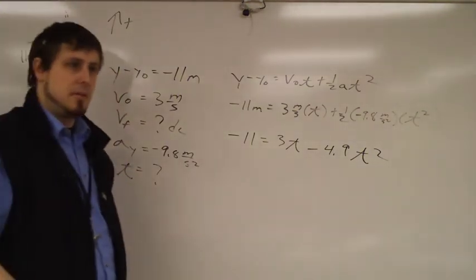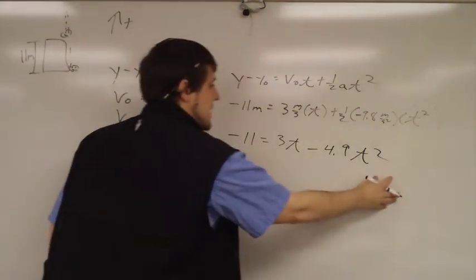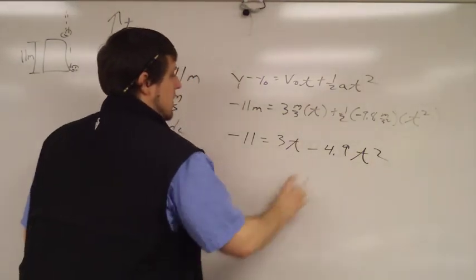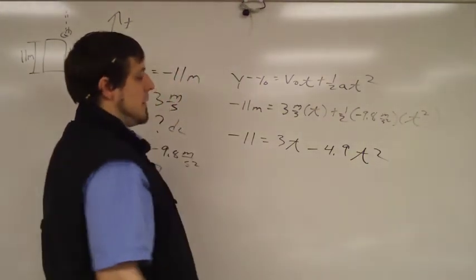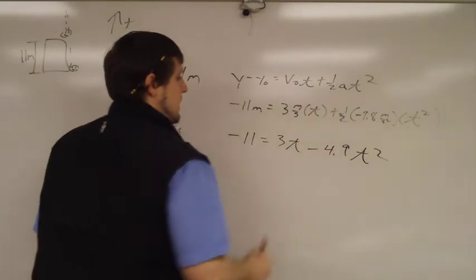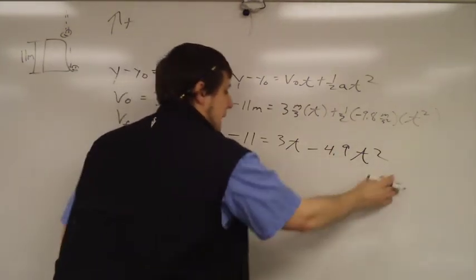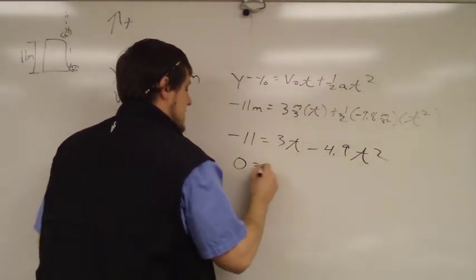Negative 11 equals 3t, this will be negative 4.9 t squared. Now this is where algebra begins, the prerequisite for this course. While you need algebra, I'm going to move the 11 over or I can move these two over. I actually like my problems open up. My guess is most of you want the problem to open down, so I will add 11 to both sides.